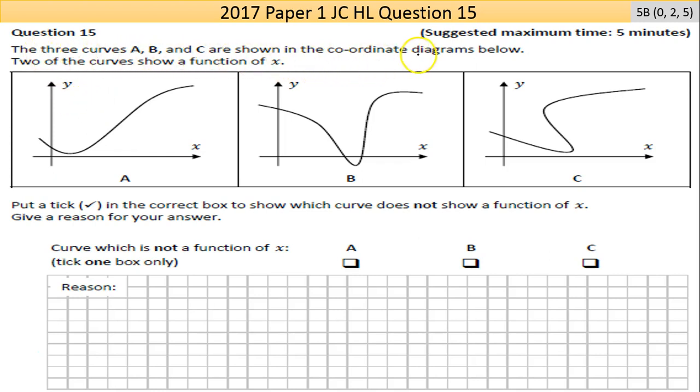The curves are shown in the coordinate diagrams below. Two of the curves show a function of x. Put a tick in the correct box to show which curve does not show a function of x and give a reason for your answer. So the 5B scale: if you had a reason or tick the right box you got two marks.